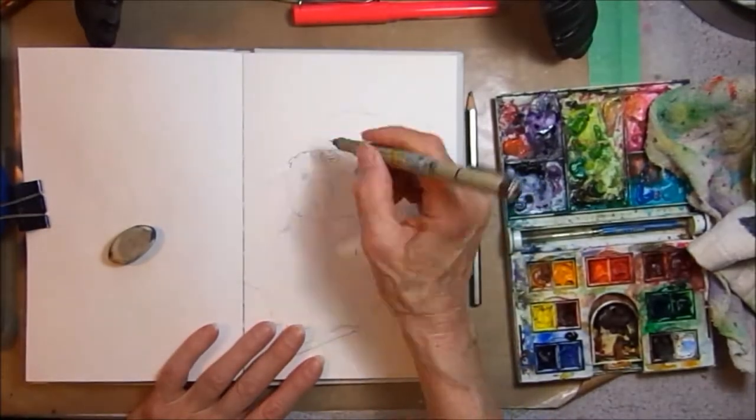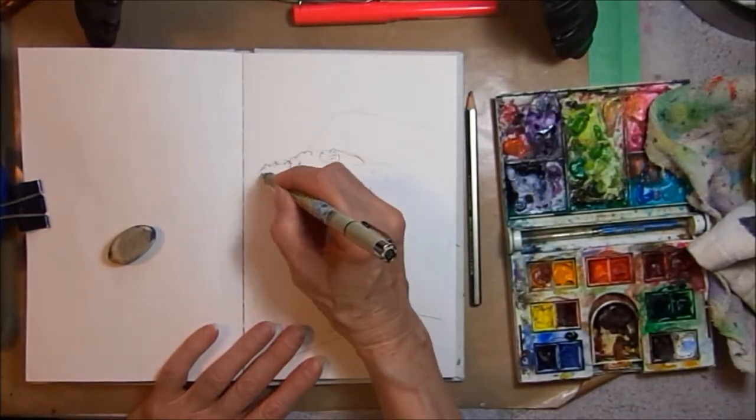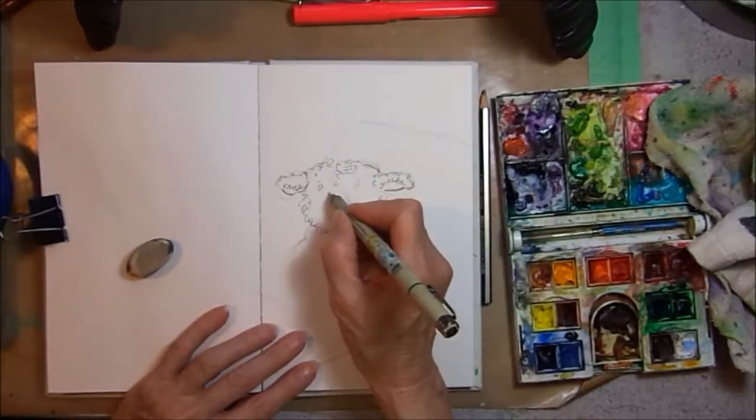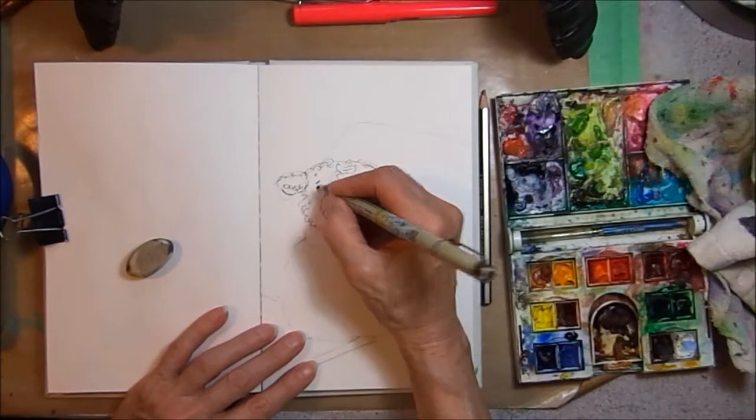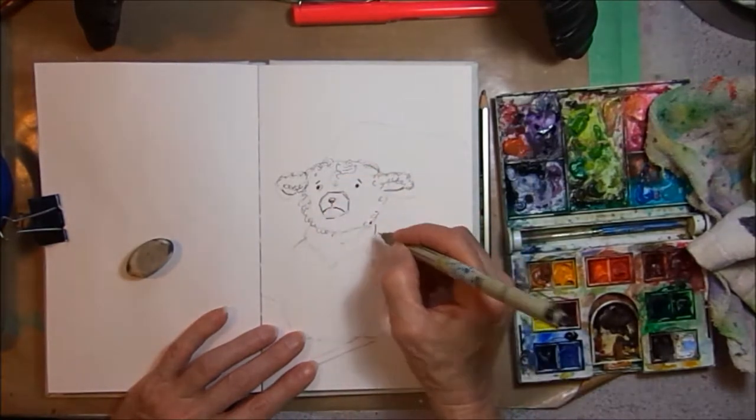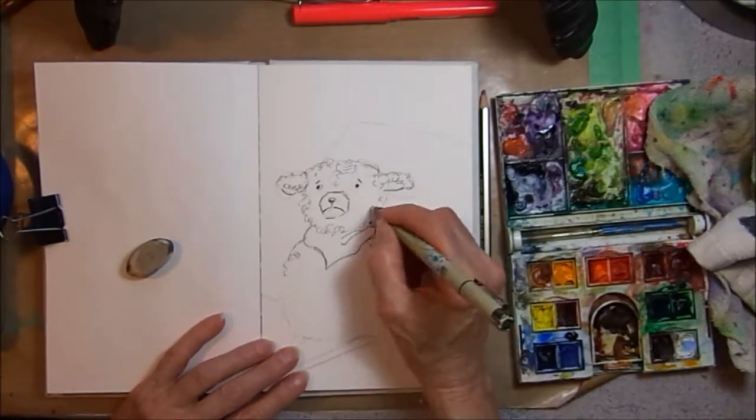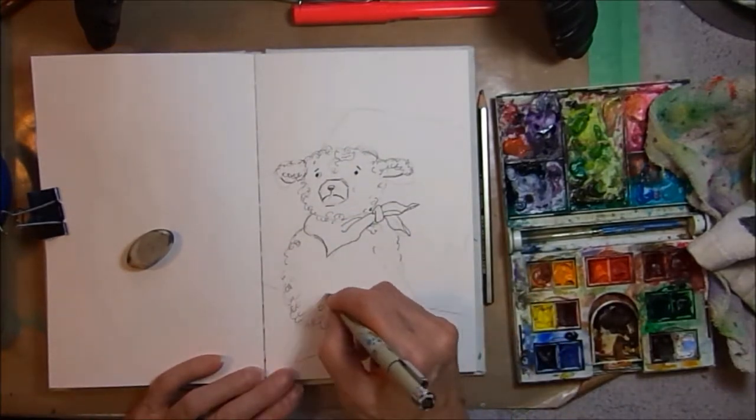I started with a pencil sketch, and now I'm going over the pencil sketch with my Micron pen. I like this Micron pen because you can use watercolor over it and the lines don't run. I'm trying to make the lamb look a little fluffy here with little curly lines.